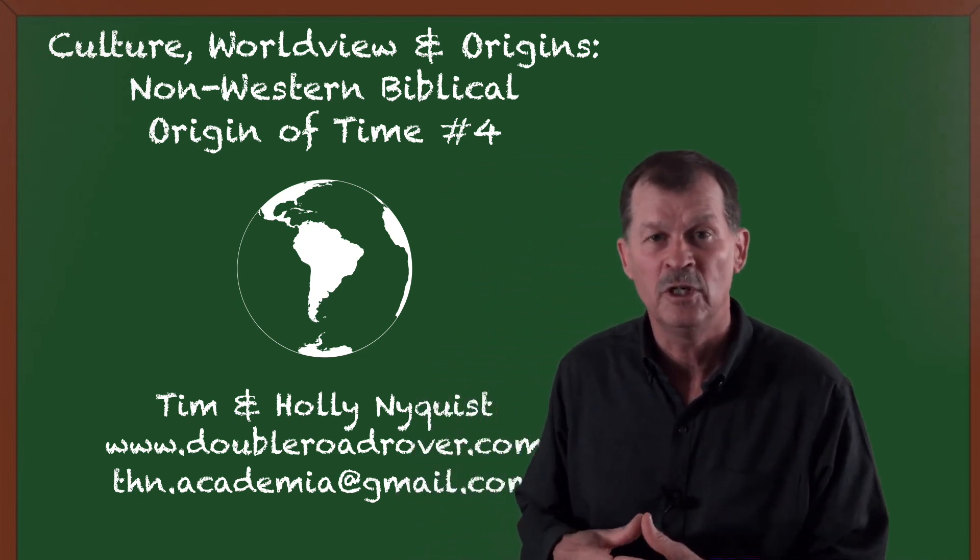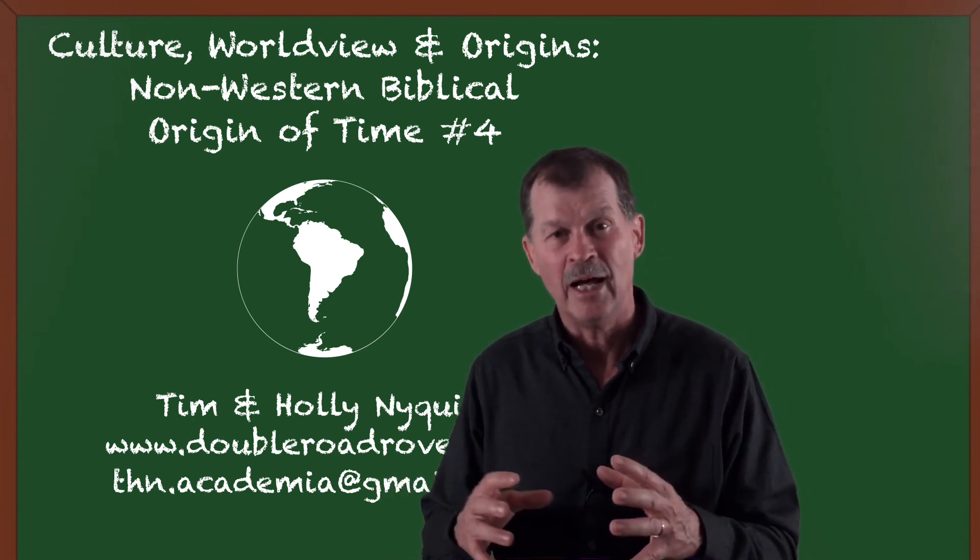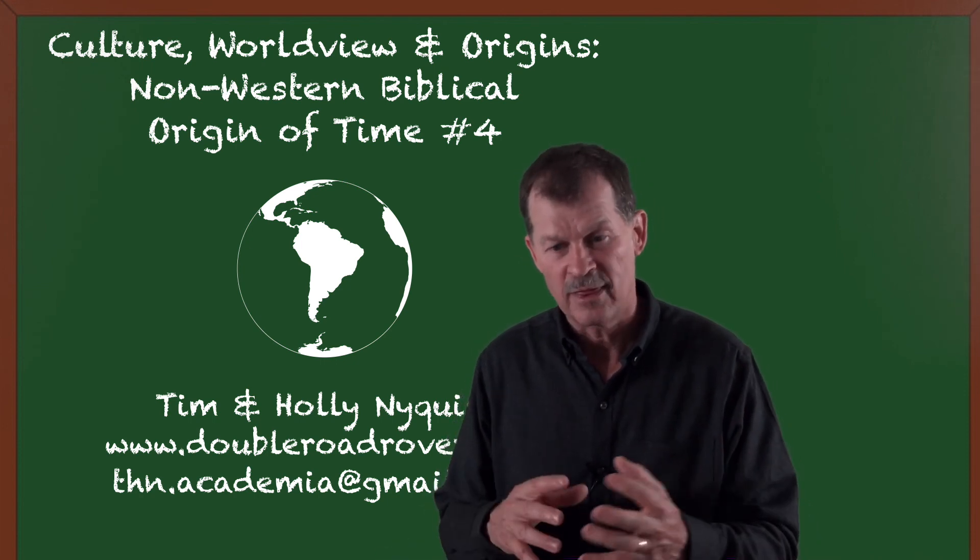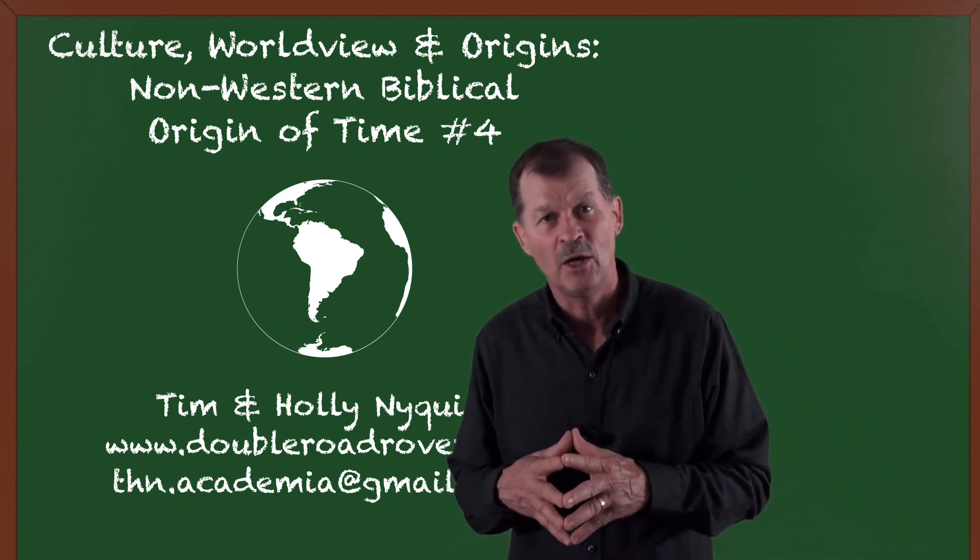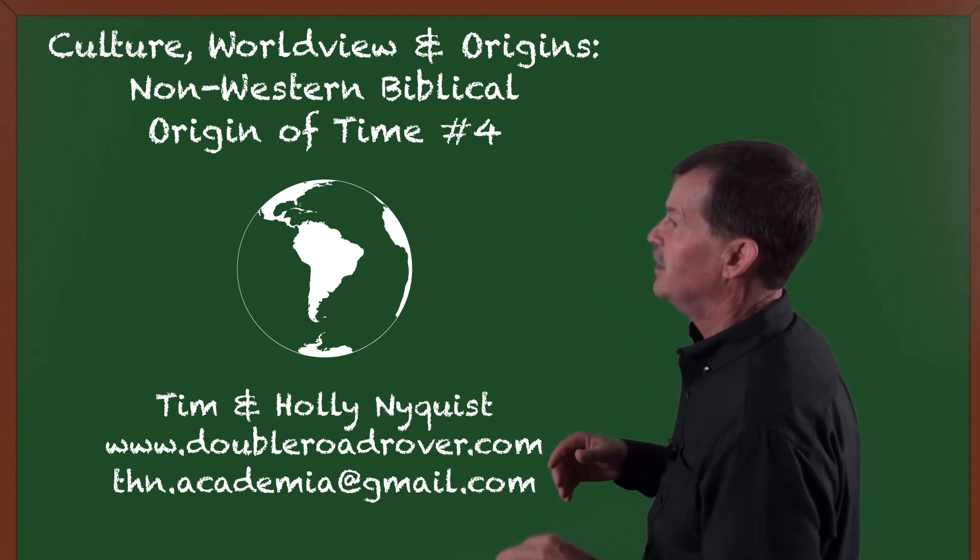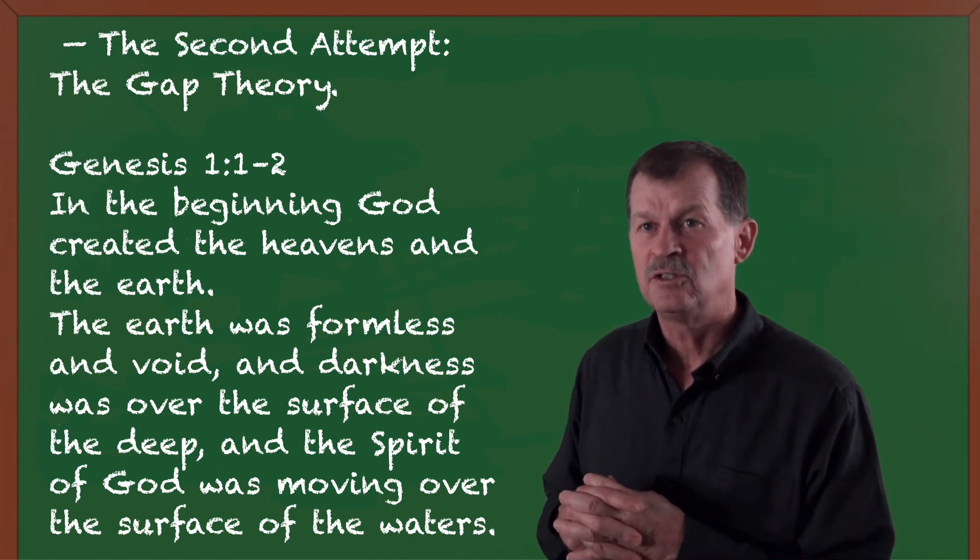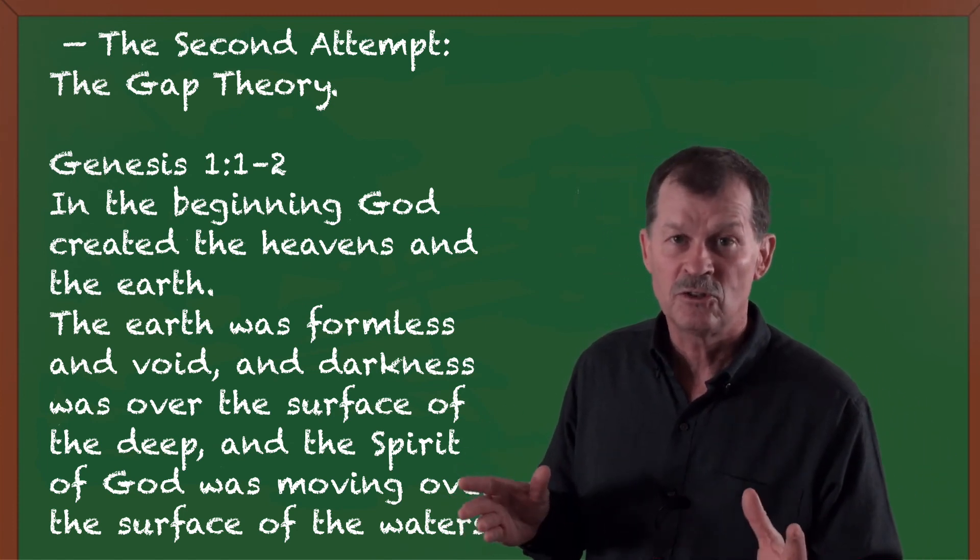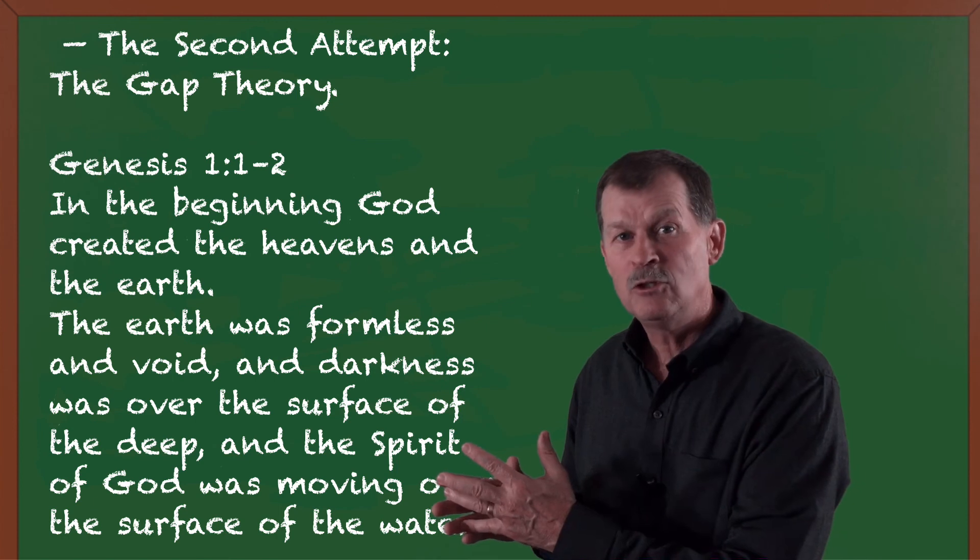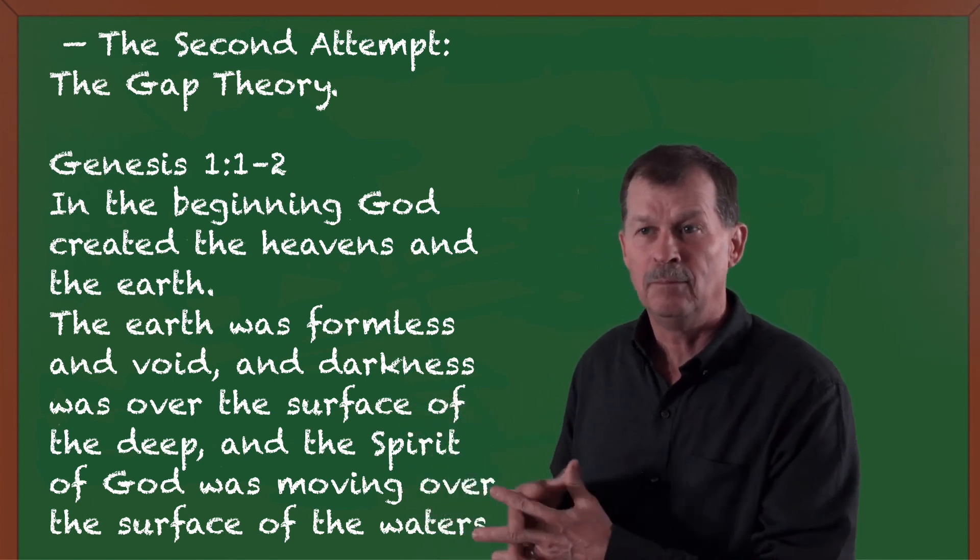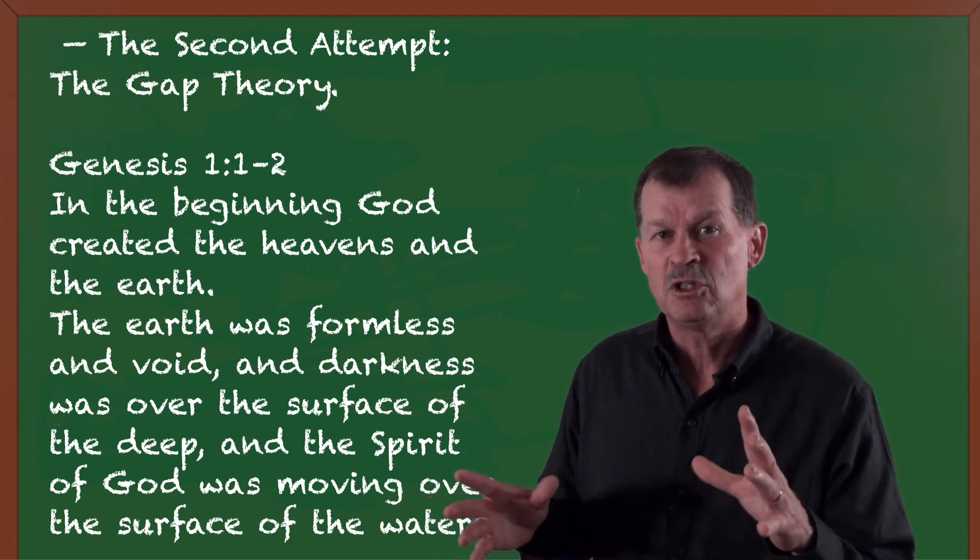But what we looked at in the previous lecture was what was one of the strategies to be able to harmonize modern-day science with the biblical record. That was called the day-age theory. Now the second strategy that we're going to be looking at is called the gap theory. What does the gap theory do? In some variations, it can preserve the days - that they were maybe 24-hour days, they were according to how the Hebrews interpreted them. But the millions and billions of years still exist.